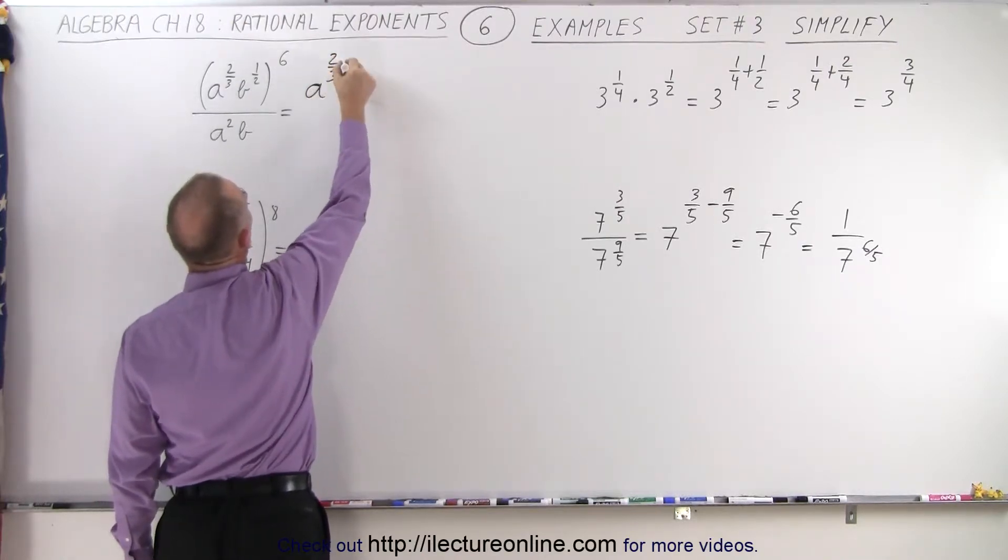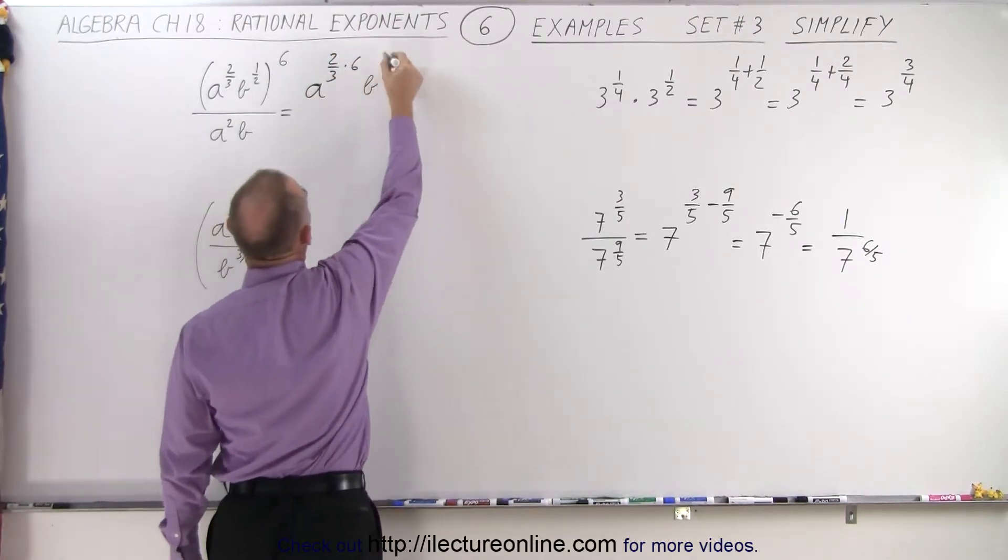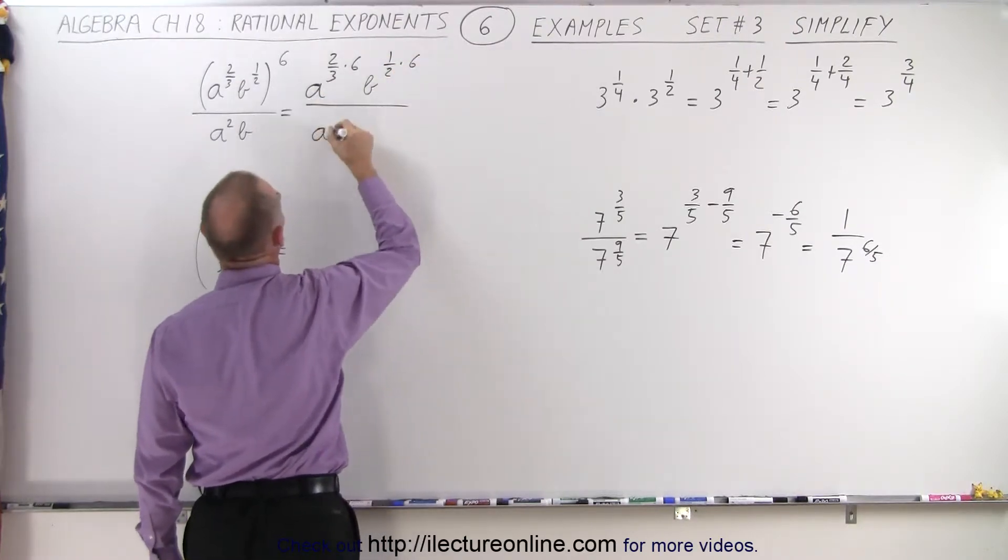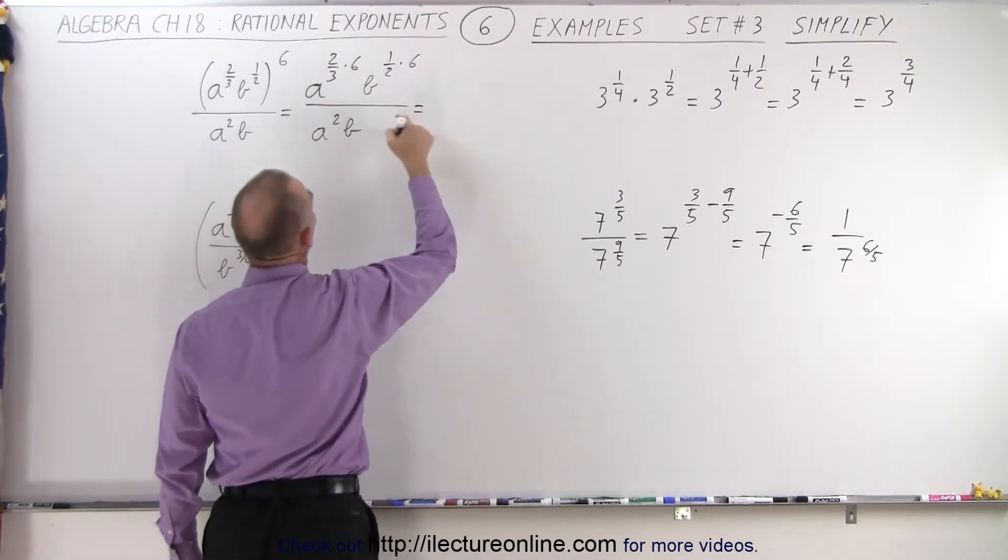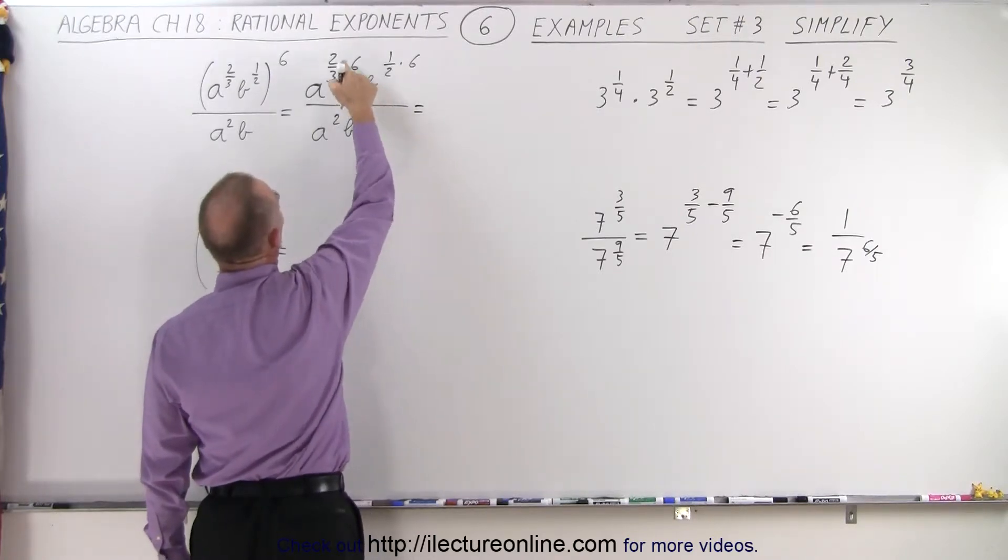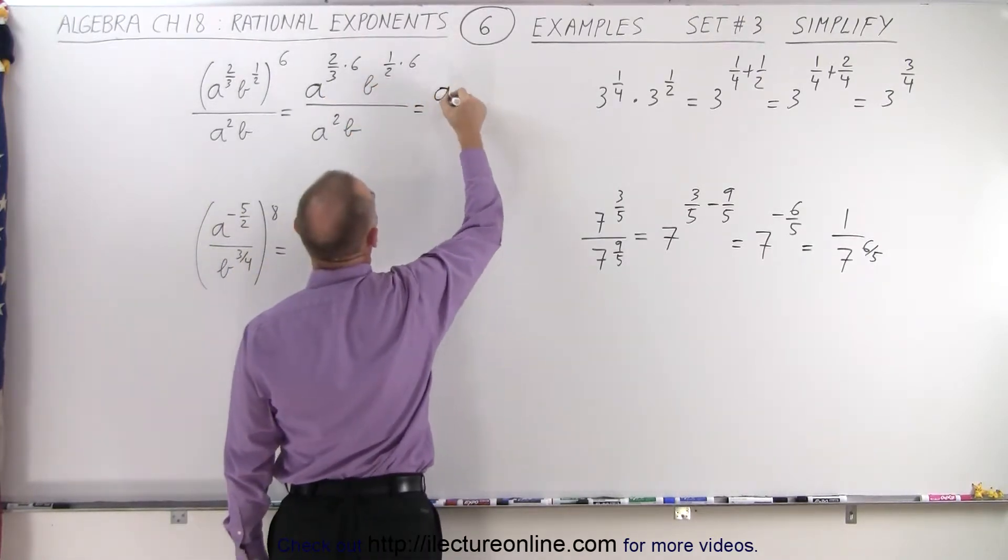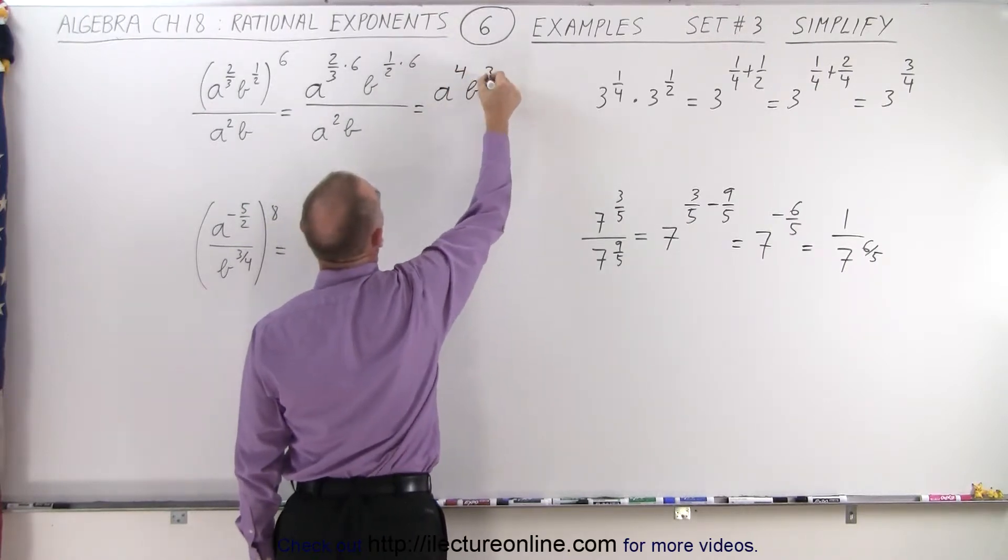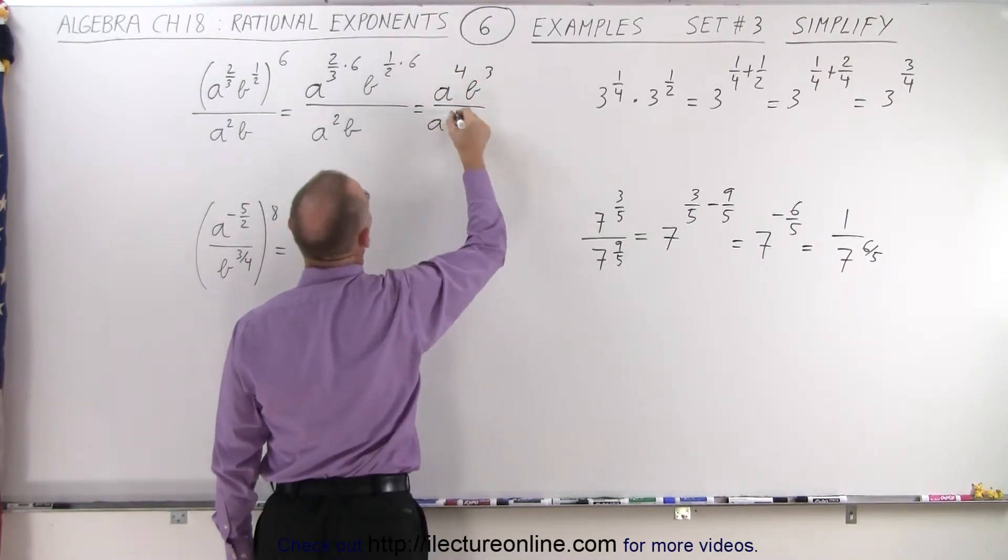So this becomes a to the 2/3 power times 6, b to the 1 1/2 power times 6, all divided by a squared times b. And then multiplying this, that's 12 divided by 3, which is 4. So we get a to the 4th. And we get b to the 3rd power divided by a squared b to the 1st power.